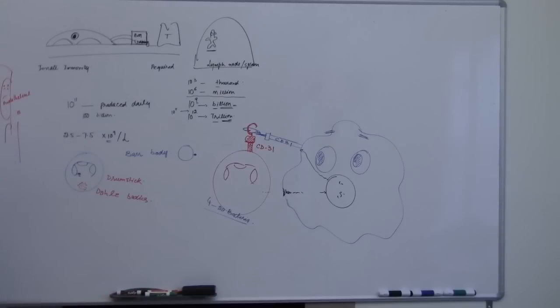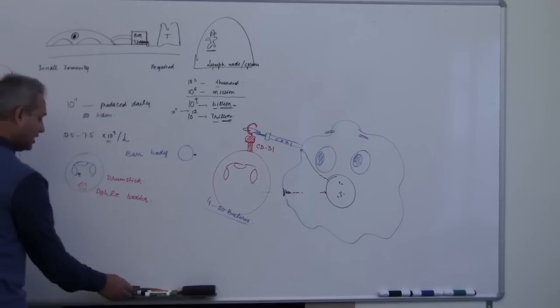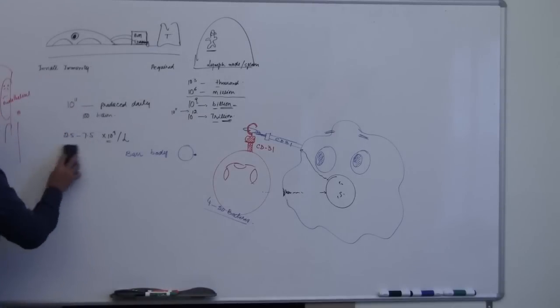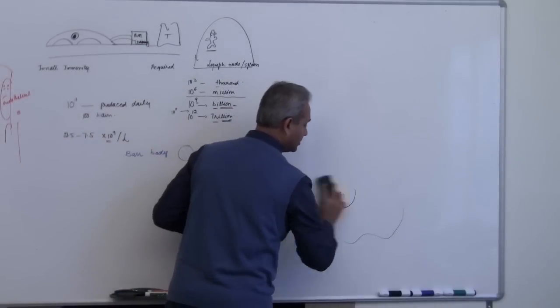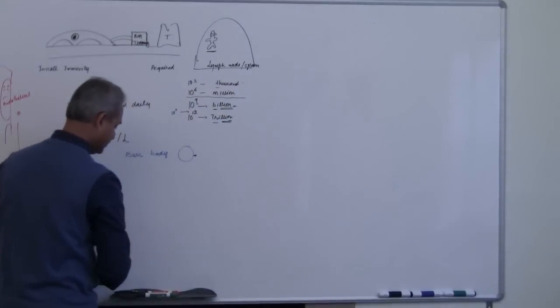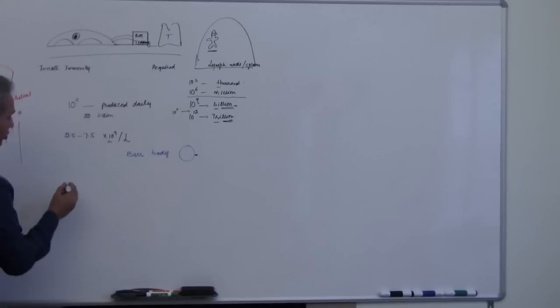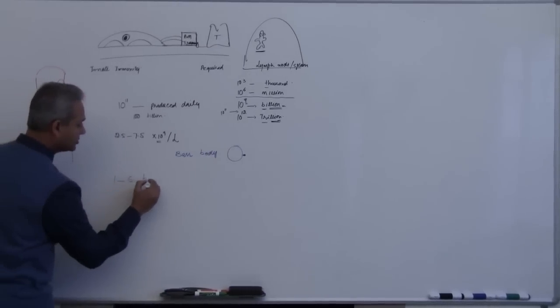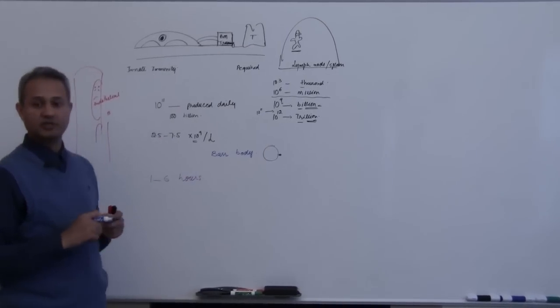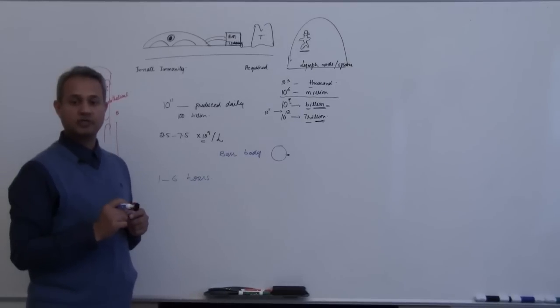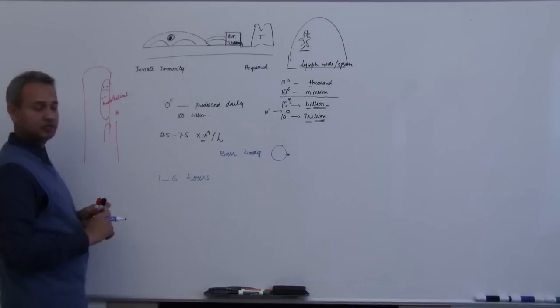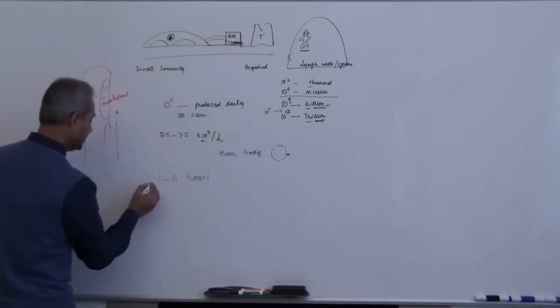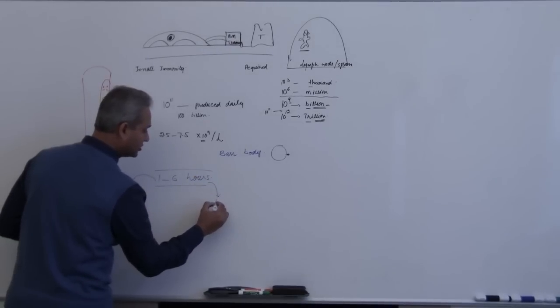Continuing, what we would talk about is the half-life of the neutrophil. Neutrophils normally stay one to six hours in the circulation. Then they would jump into the tissue. So from the circulation, from the blood vessel, they will jump out into the tissue.